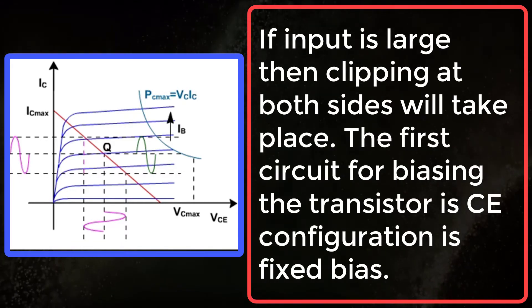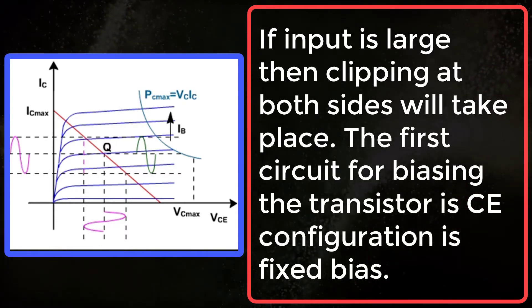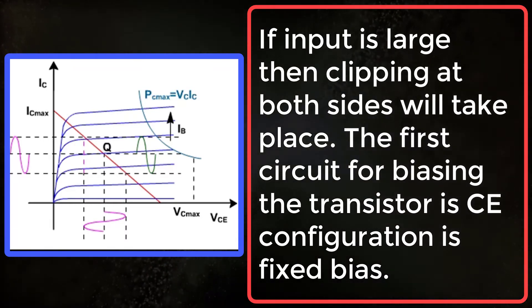If input is large, then clipping at both sides will take place. The first circuit for biasing the transistor in CE configuration is known as fixed bias.